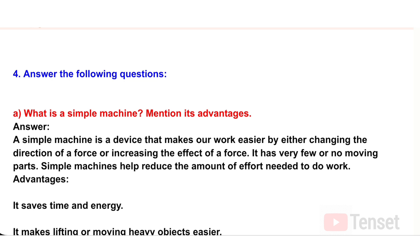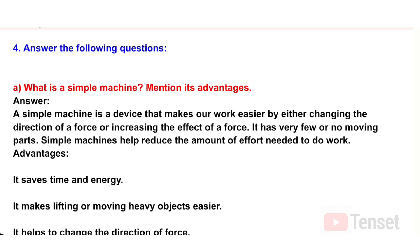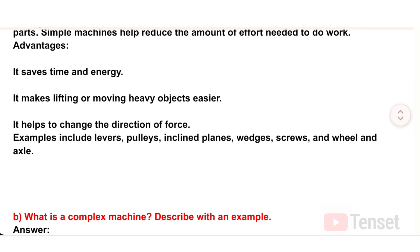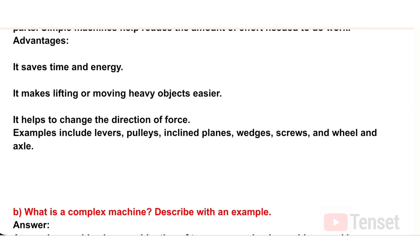Question 4: Answer the following questions. A) What is a simple machine? Mention its advantages. Answer: A simple machine is a device that makes work easier by either changing the direction of a force or increasing the effect of a force. It has very few or no moving parts. Advantages: it saves time and energy, makes lifting or moving heavy objects easier, and helps change the direction of force.